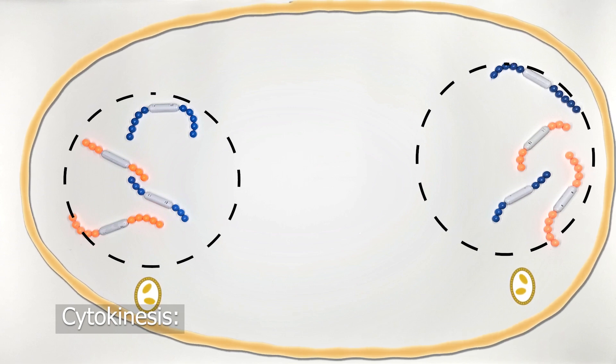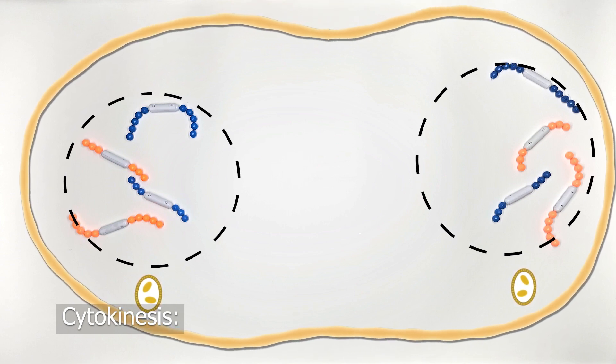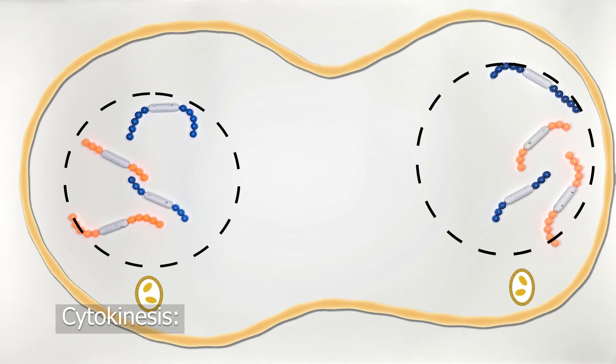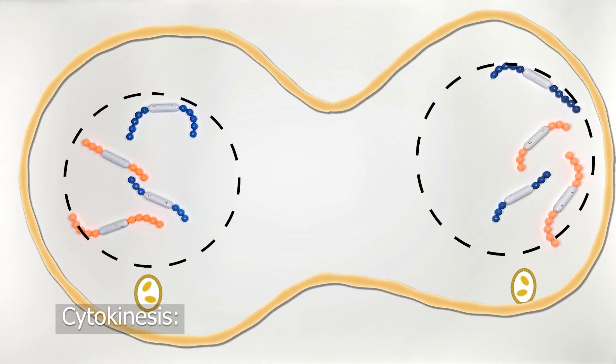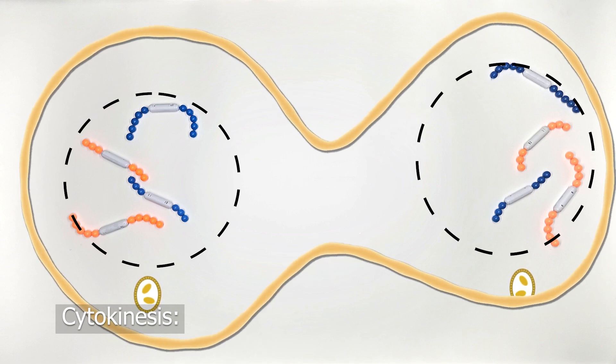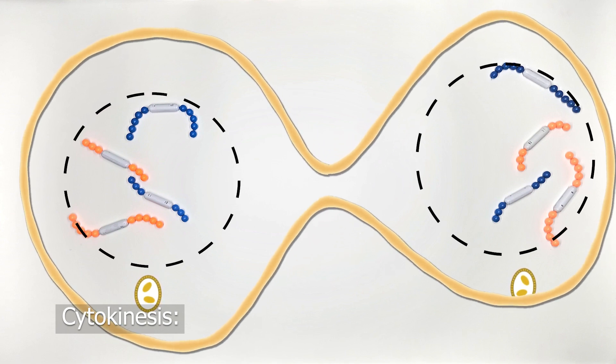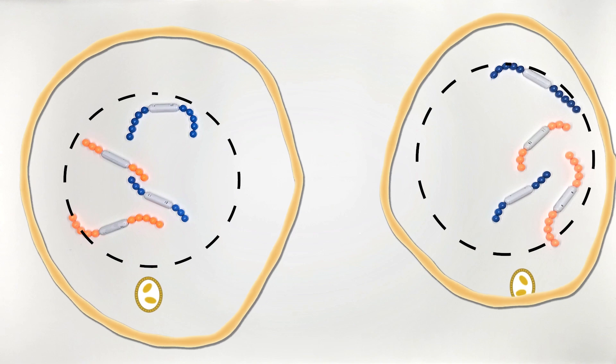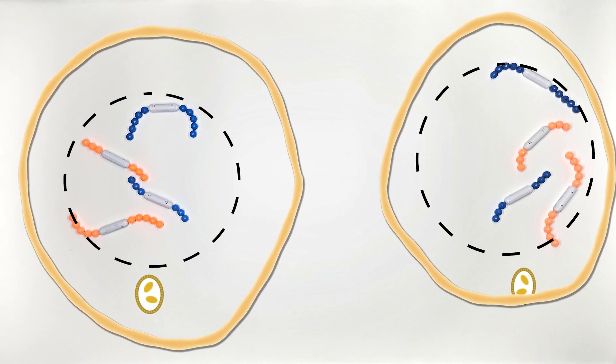Cytokinesis occurs during telophase. It's different for animal and plant cells. For animal cells, we see a cleavage furrow occurring, where it looks as though the cell is pinched until we have a separation of the plasma membrane into two different cells.